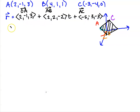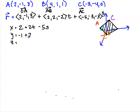Converting to parametric equations by isolating each element: x = 2 + 2t − 5s, y = −1 + 2t − 3s, and z = 3 − 2t − 3s. Don't forget to include both parameters in each equation.